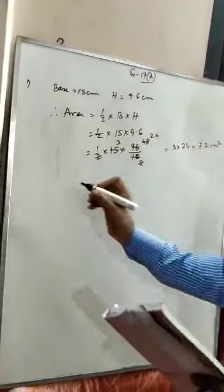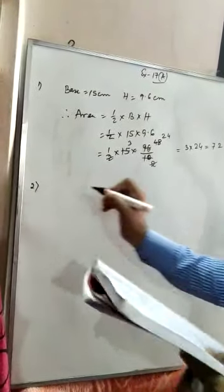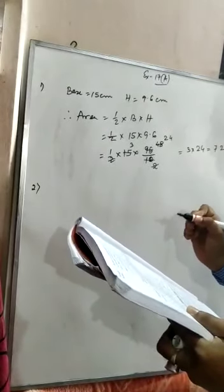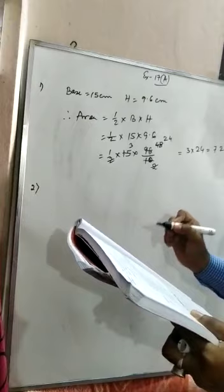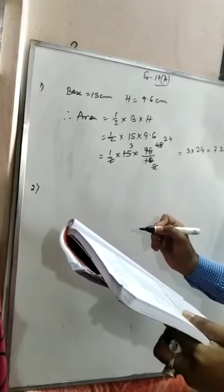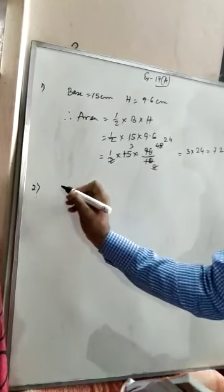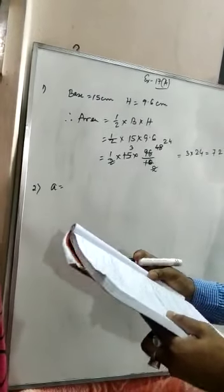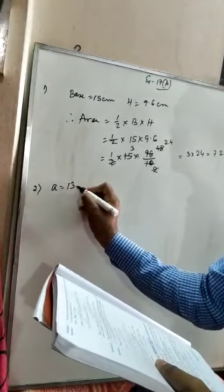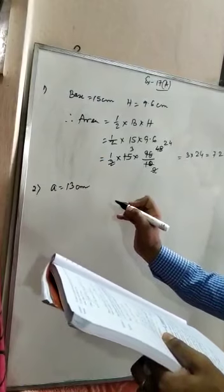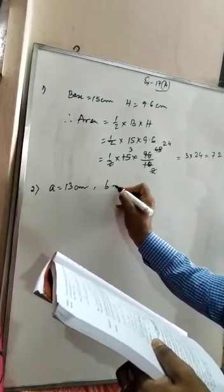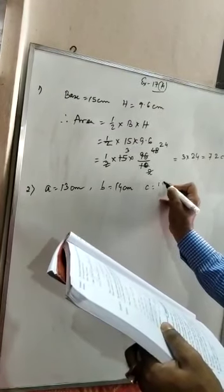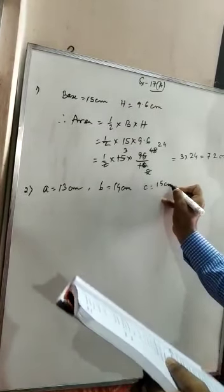Next, we are going for question number 2: find the area of a triangle whose sides are 13 cm, 14 cm and 15 cm. You see, three different sides are given, so we understand it is a scalene triangle. First side A is 13 cm, second side B equal to 14 cm, and third side C equal to 15 cm.